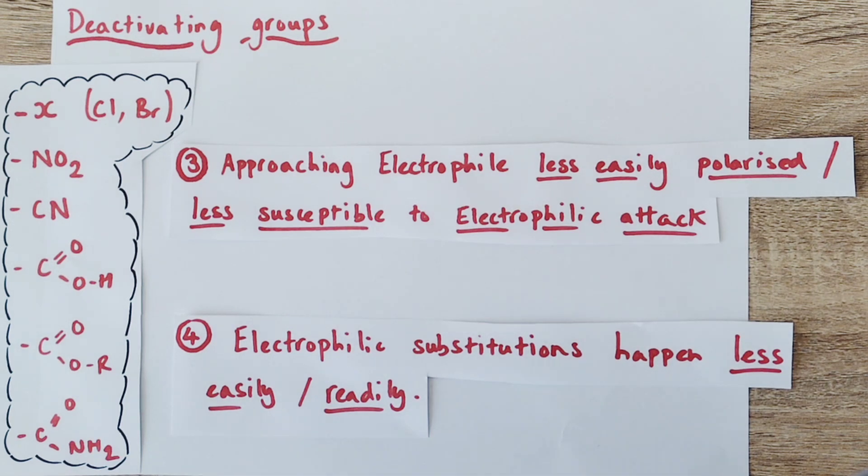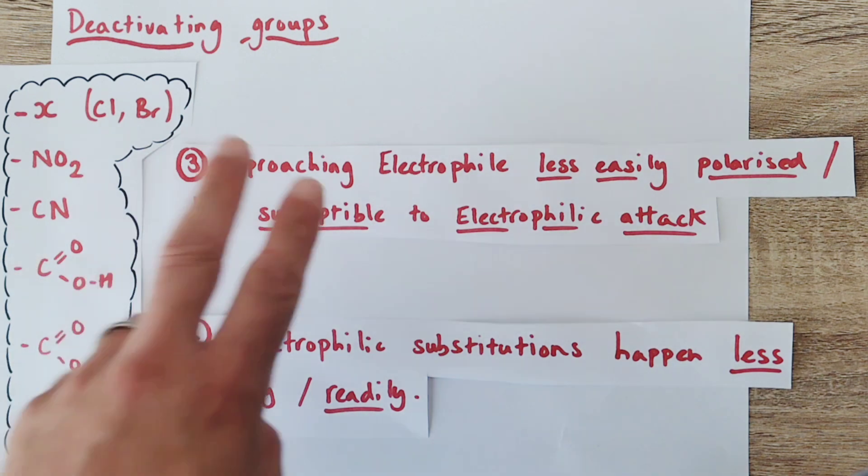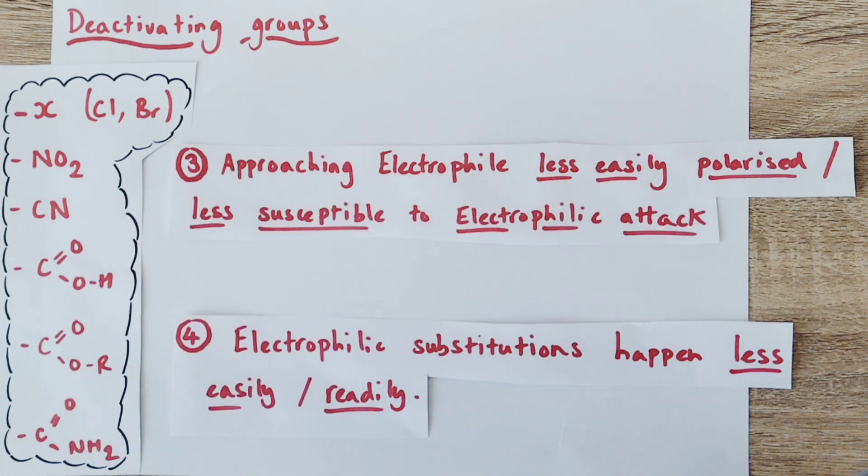And now we see the exact opposite is true to our activating groups in terms of what's happening to our electrophile. Approaching electrophiles are now less easily polarized because the benzene ring structure is a less good nucleophile, has less electron density to do that polarizing and push electrons around in the approaching molecule. It will also be less susceptible to electrophilic attack from strong electrophiles because it has less electron density to donate towards the positive charge of the approaching electrophile. Either way, electrophilic substitution reactions will happen less easily and less readily and require more energy for further substitution reactions to take place.